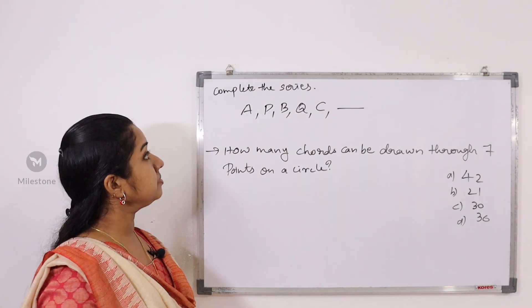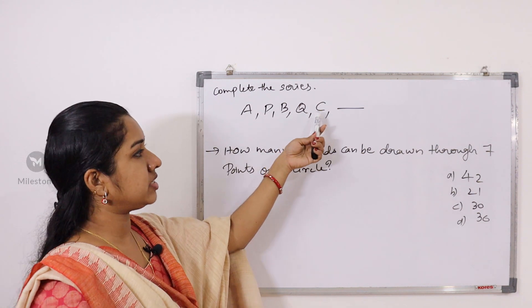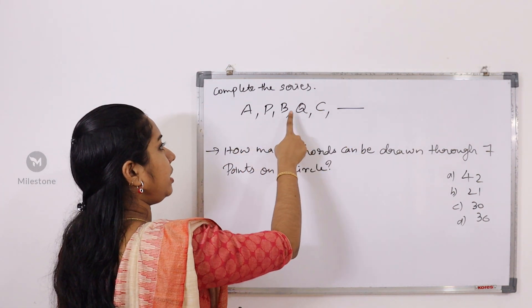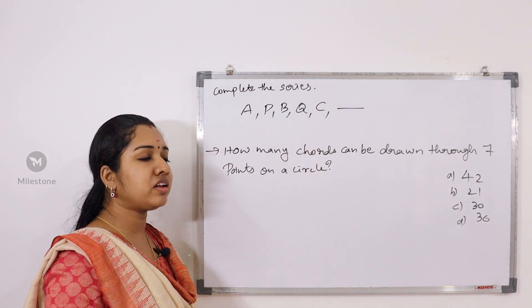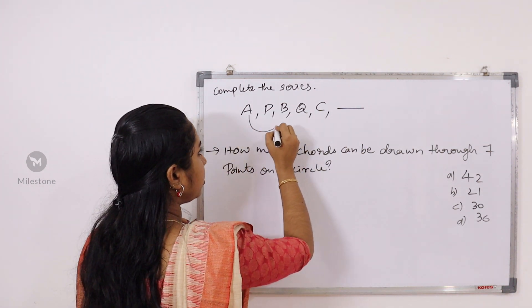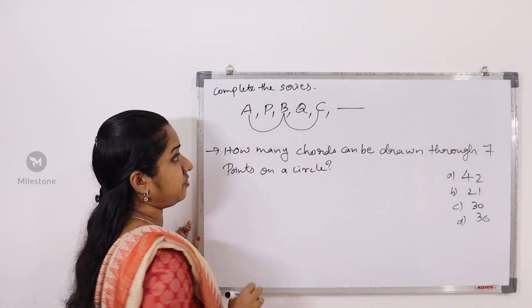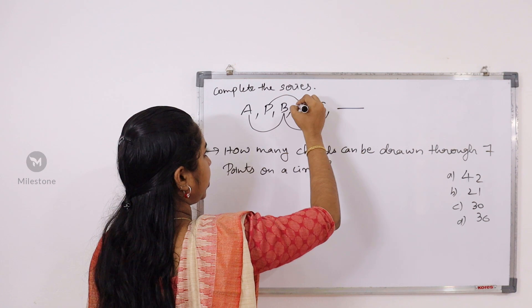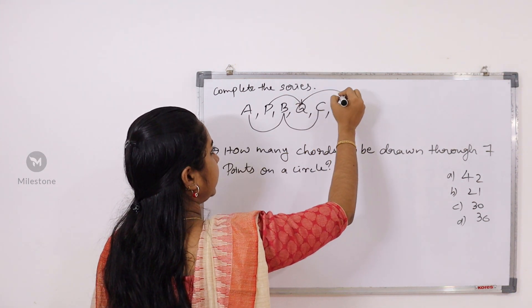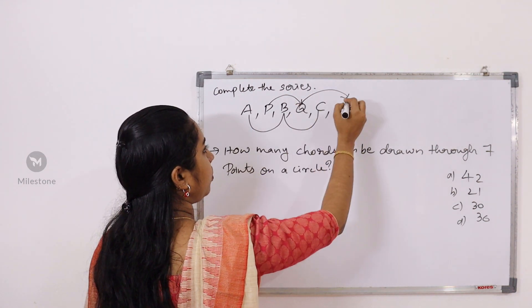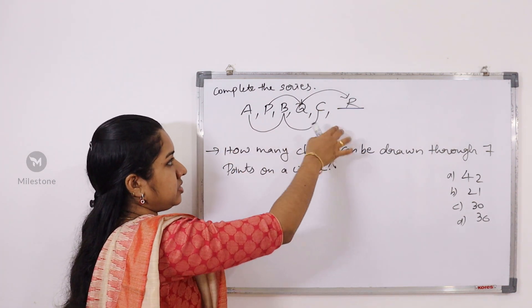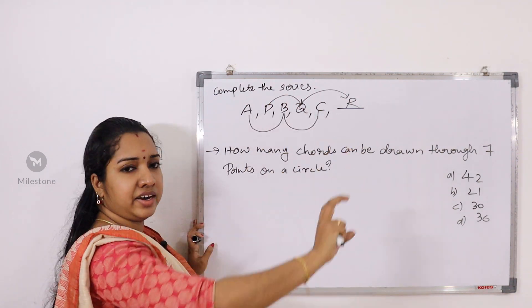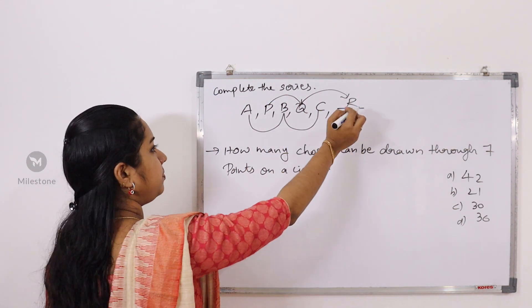Complete the series: A, P, B, Q, C — what is the relation? A, B, C and P, Q, R alternate. The answer is R. So the series is A, B, C, P, Q, R.